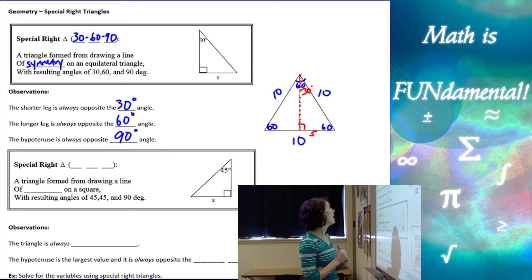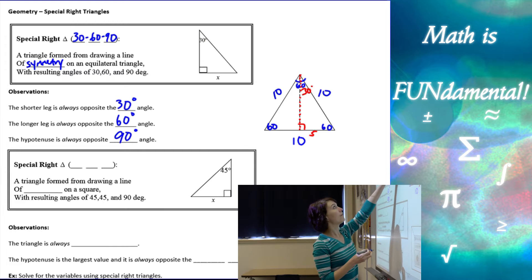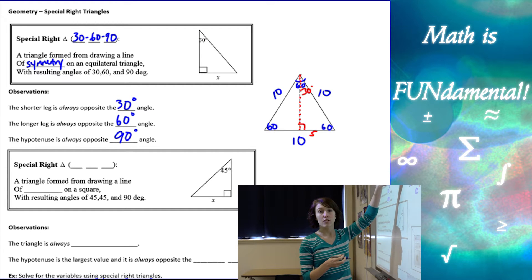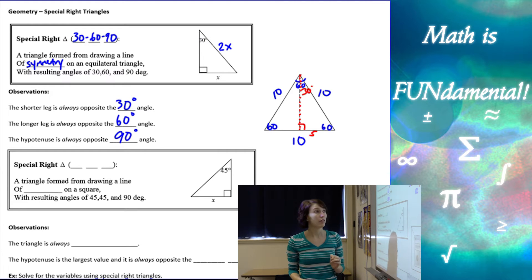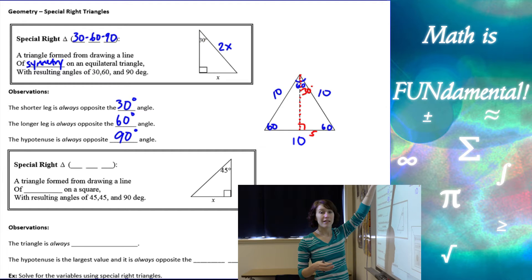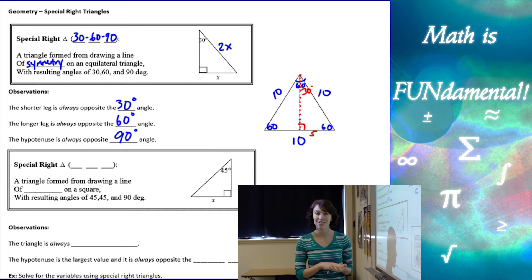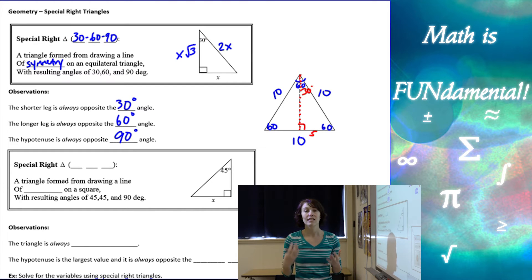In our special right triangle we have this relationship between the sides. If the side across from the 30 degrees is x, then our hypotenuse is going to be 2 times that x value. You can see that with my example where the hypotenuse is still 10, but the side next to the 60 degrees is now only 5 — we split it in half. The other leg we could find using the Pythagorean theorem, but the shortcut for this triangle is that this side is x times the square root of 3.